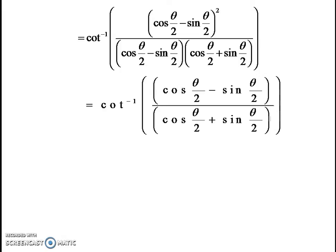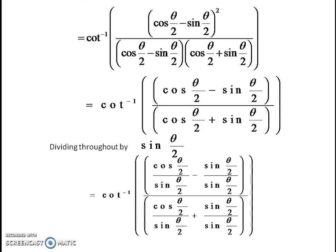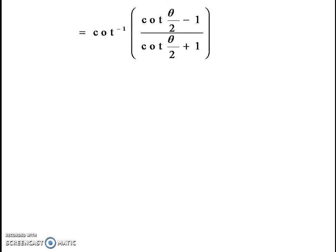One factor is cancelled, because cos theta by 2 minus sin theta by 2 is common in the numerator and denominator. So the end product is cot inverse of cos theta by 2 minus sin theta by 2 over cos theta by 2 plus sin theta by 2. Dividing throughout by sin theta by 2, it becomes cot inverse of cot theta by 2 minus 1 over cot theta by 2 plus 1.